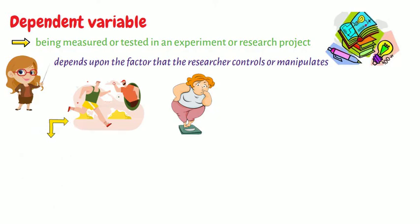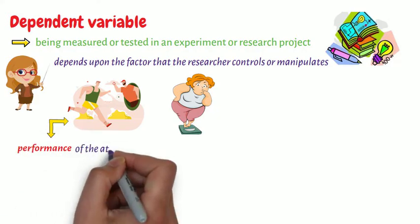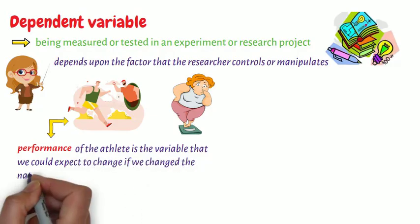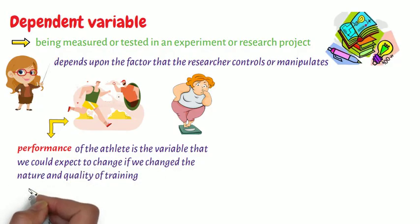In the first example, performance of the athlete is the variable that we could expect to change if we change the nature and quality of training. Hence, it is the dependent variable.